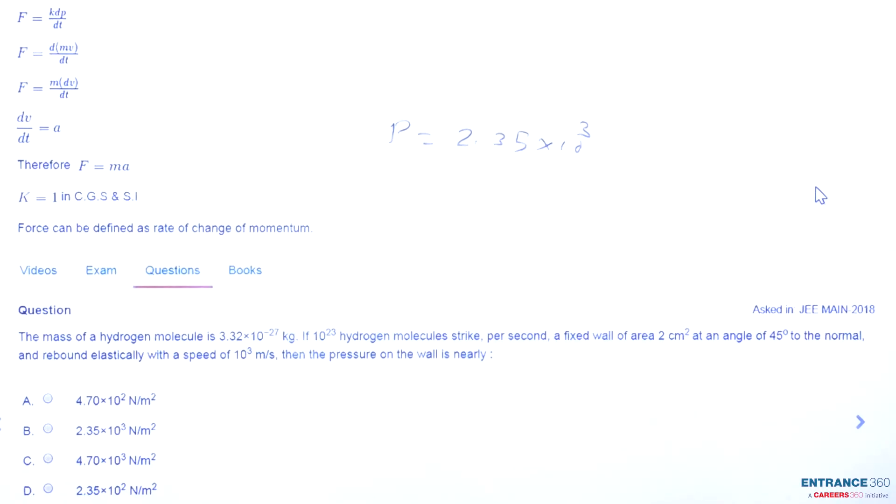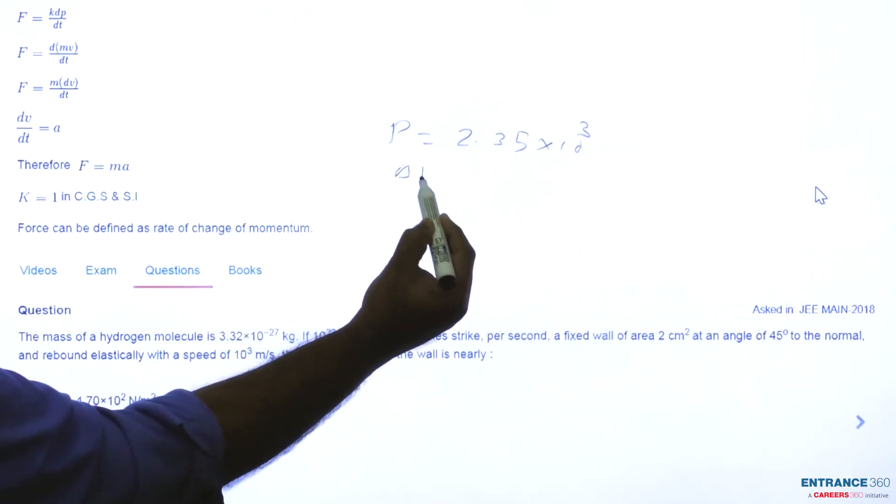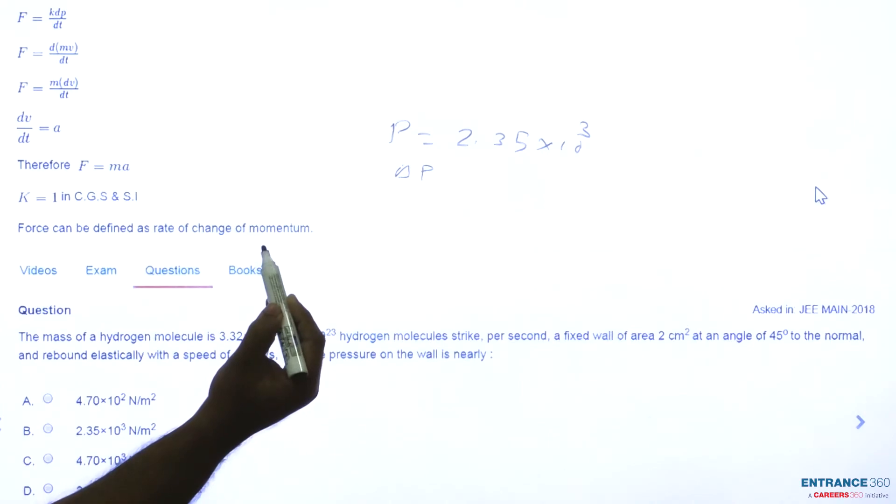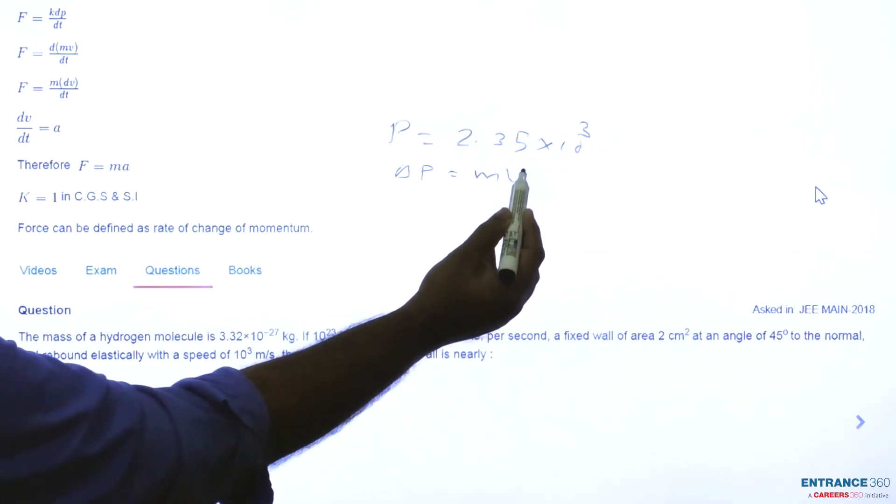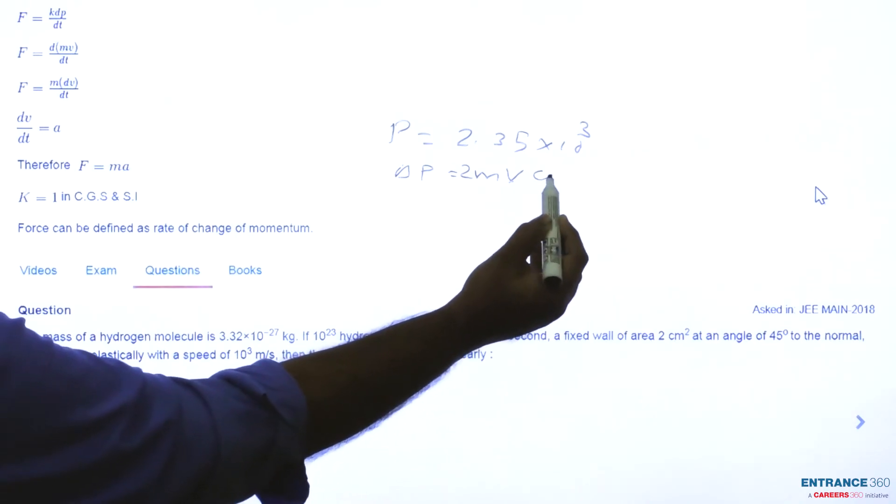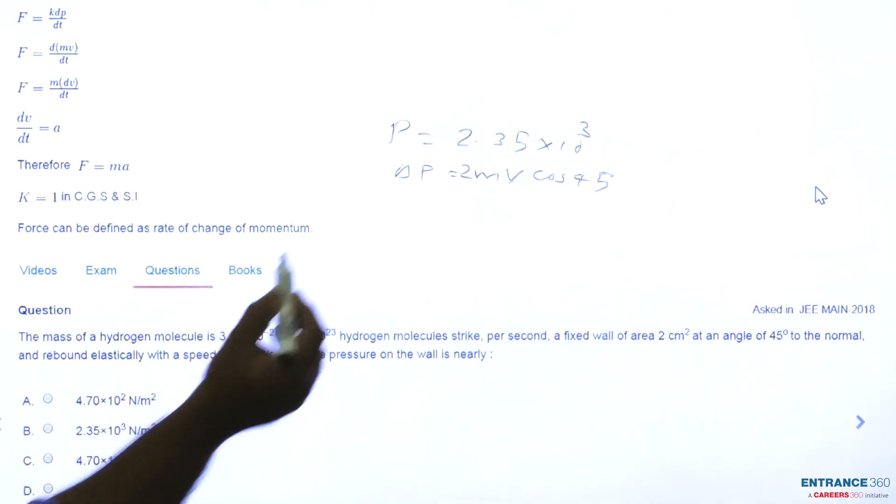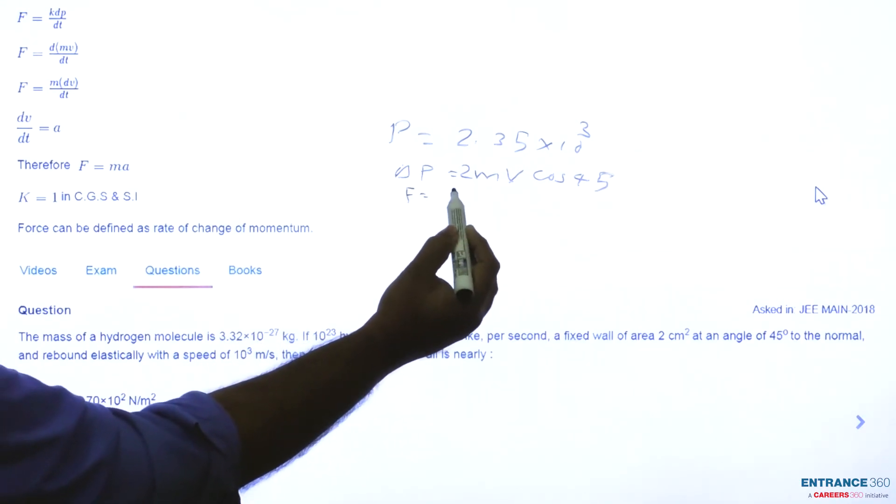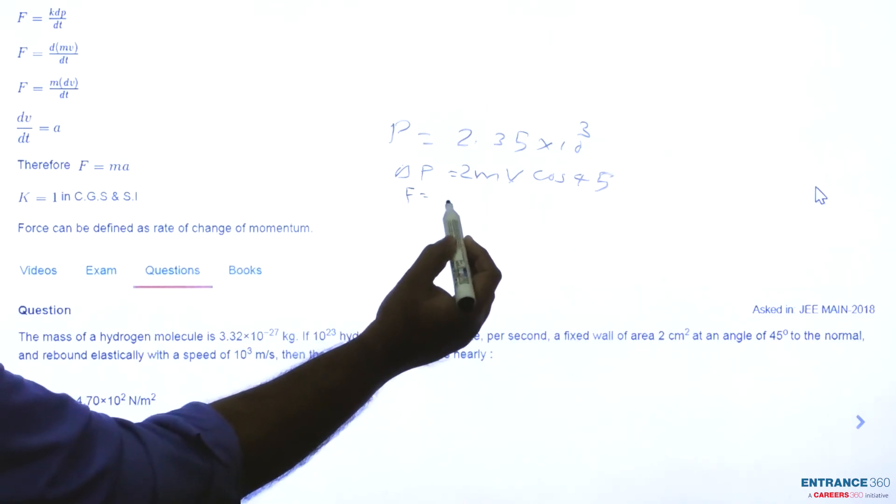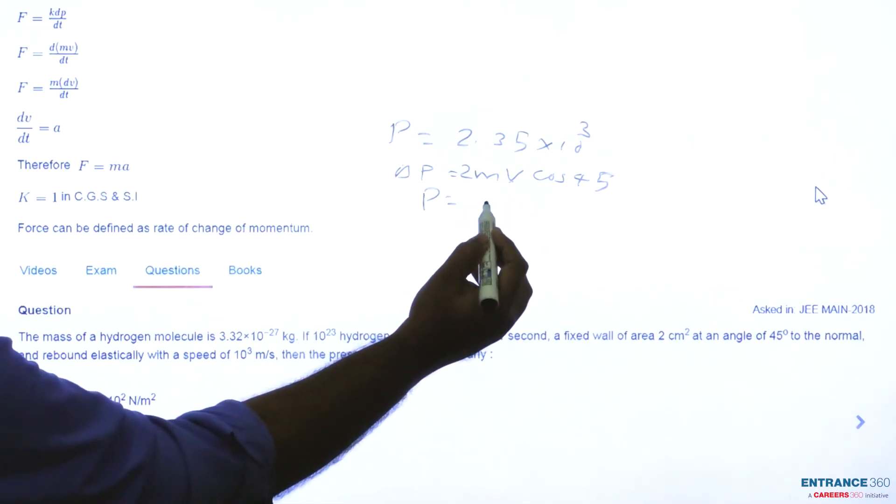Let's rewind the steps. First we found change in momentum Δp using the formula 2mv cos 45°, then we calculated rate of change of momentum equal to force, and finally we found pressure value using the equation force by area.